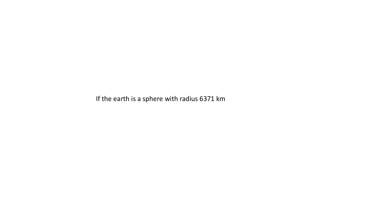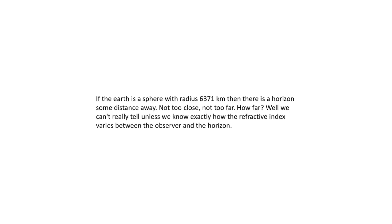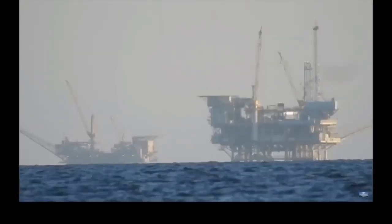Although not impossible. But if we are talking about the horizon that we actually see, then the original statement is woefully insufficient because it doesn't take refraction into account. All you are left with is: if the earth is a sphere with a radius of 6,371 kilometers, then there is a horizon some distance away — not too close, not too far. How far? We can't really tell unless we know exactly how the refractive index varies between the observer and the horizon. But we have already determined that the earth is a sphere by virtue of this image, and all we are trying to establish is the radius — which cannot be done using this method.